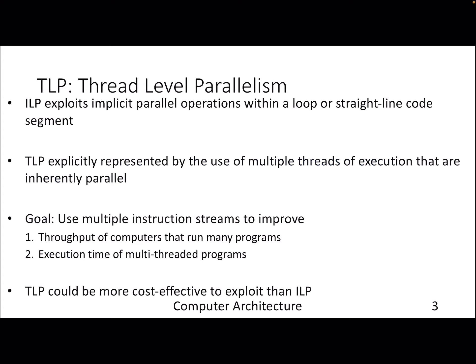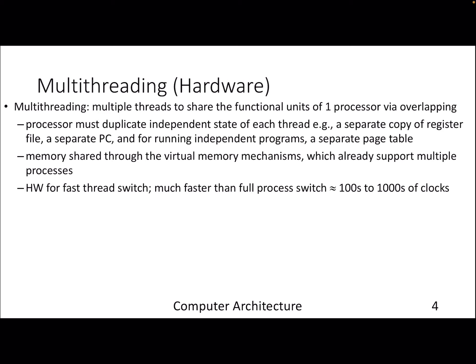When we talk about thread level parallelism, the goal is to improve the performance of multi-threaded programs. When you are solving a task using multiple threads at the software level, which are eventually mapped to multiple hardware threads, then thread level parallelism comes into picture. Otherwise, if you are running independent sequential programs with no notion of data sharing among threads, there is no point of thread level parallelism. In hardware multi-threading, there are multiple hardware threads that share different functional units either by overlapping or duplicating resources.